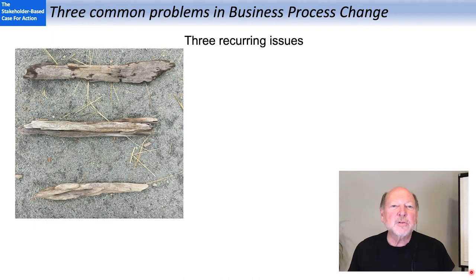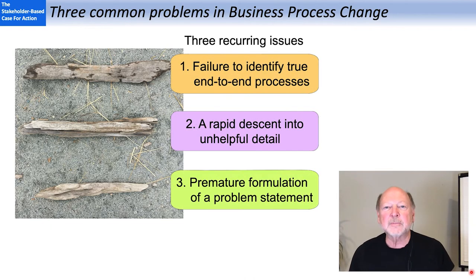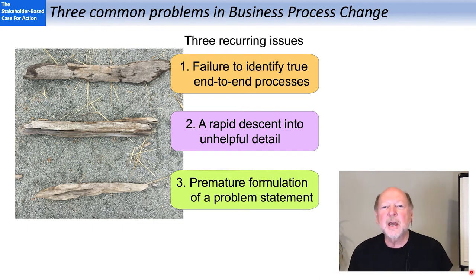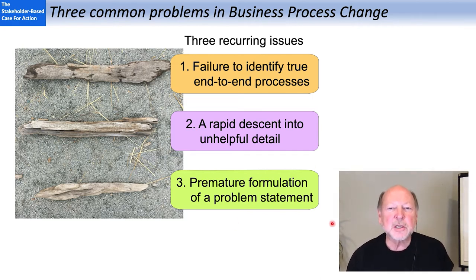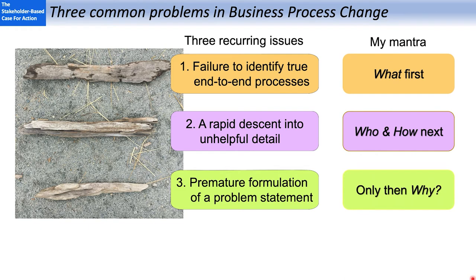This is a topic of interest to me because when I am helping organizations that are struggling with their change initiatives, three issues arise again and again: failure to identify true end-to-end processes, a rapid descent into the weeds, and premature formalization of a problem statement — in particular, formalizing a problem statement before we even know what the processes are. So my mantra is: what first, who and how next, only then why.